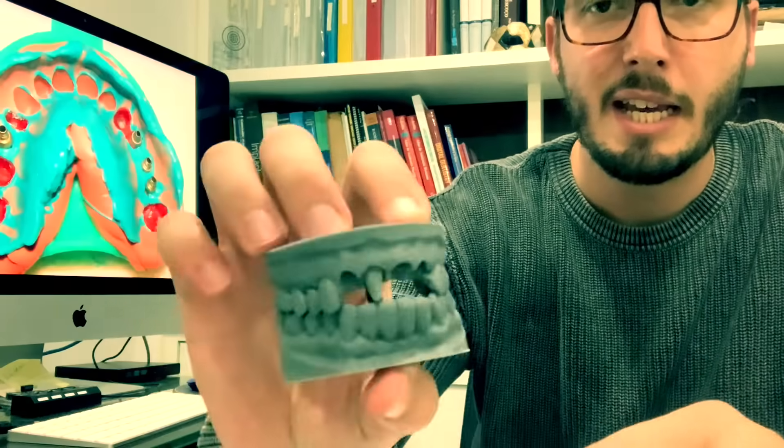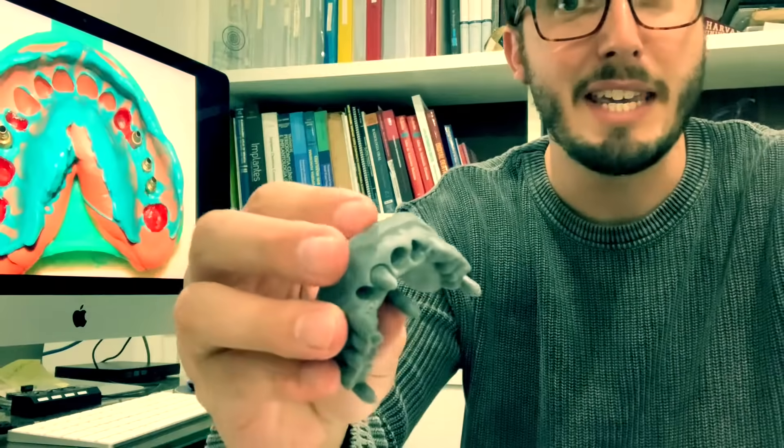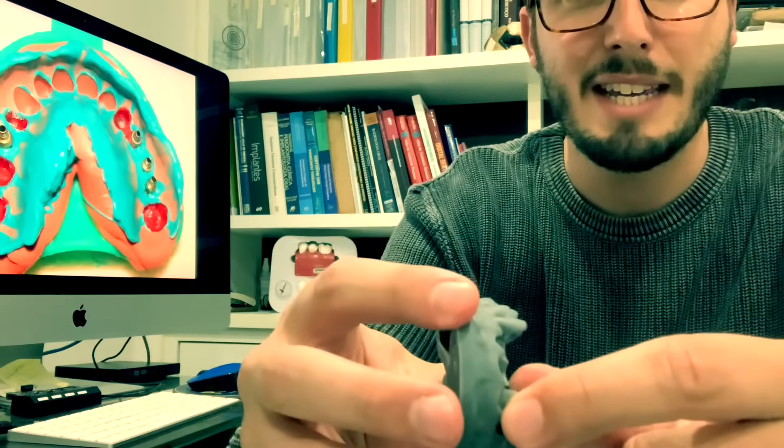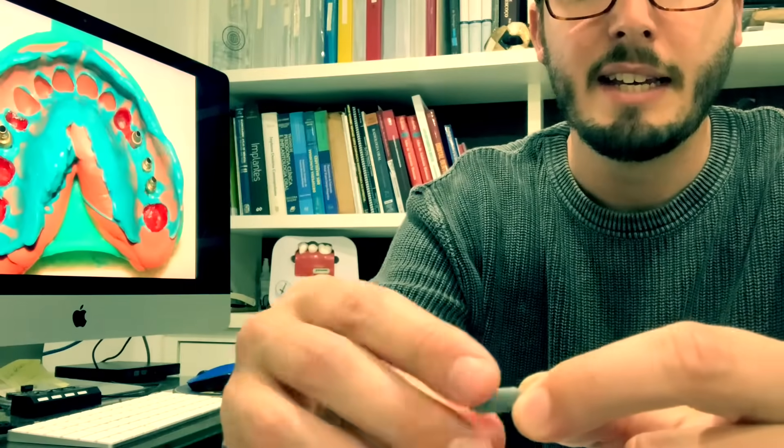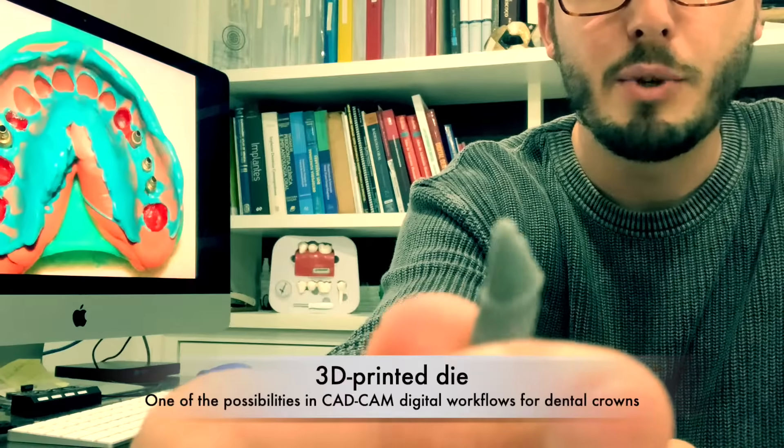And we have even a 3D printed die here. So that's the die. I'm going to remove the die, the 3D printed die, and you can even try your crown on the 3D printed dies in order to adjust interproximal surfaces for example of your crown.